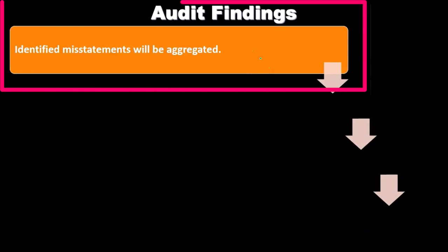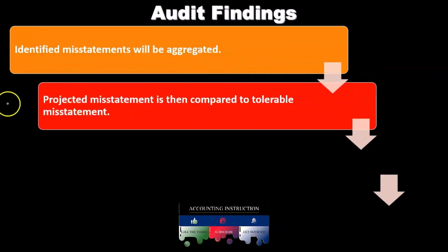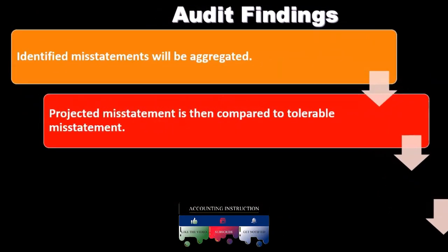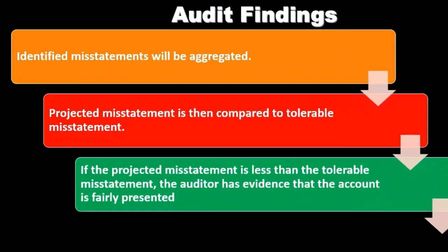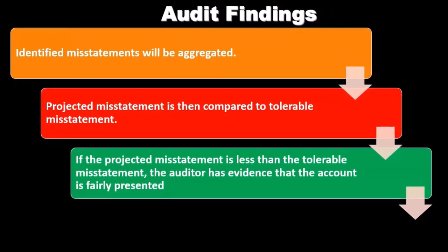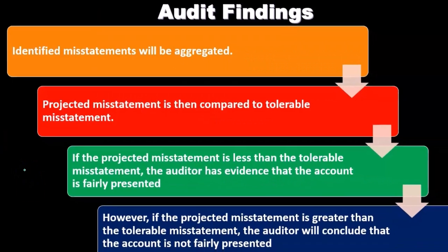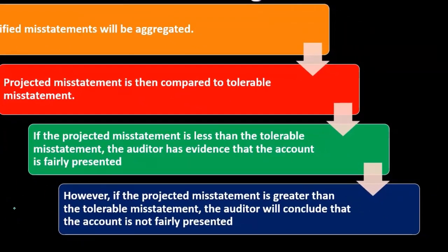Audit findings — misstatements — are aggregated, and the projected misstatement is compared to the tolerable misstatement. If the projected misstatement is less than the tolerable misstatement, the auditor concludes the account is fairly presented. If the projected misstatement is greater than the tolerable misstatement, the auditor concludes the account is not fairly presented.